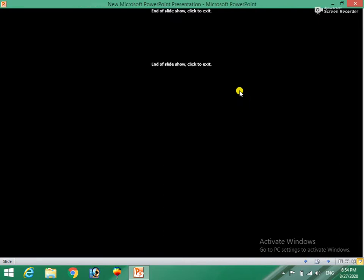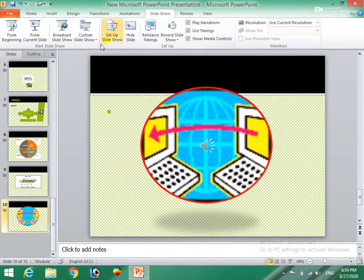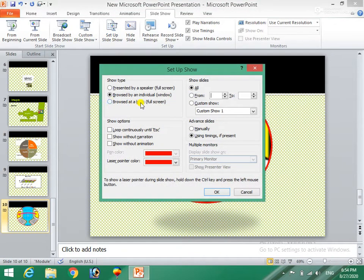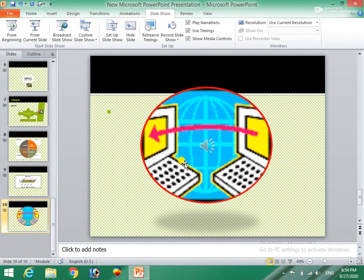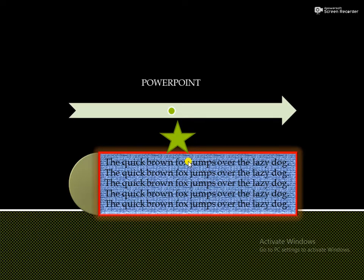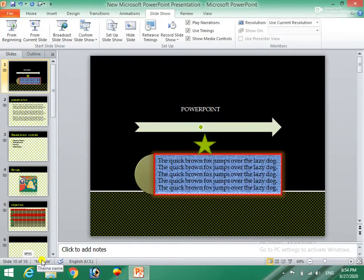The first thing I must do is to browse a screen. The F5 button will press and then the F5 button will change. The first thing I must do is to use a circuit button.